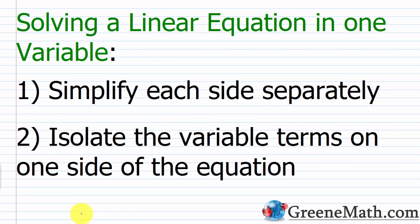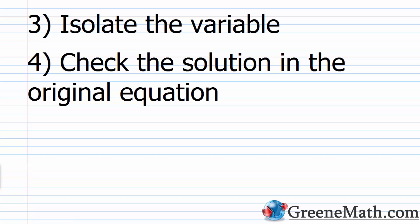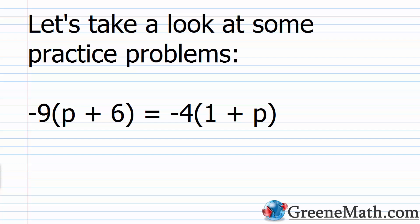Now that we've covered some of the basics, let's talk about the procedure to actually solve a linear equation in one variable. Your main goal is to isolate the variable — you want X, Y, Z, or whatever the variable is on one side, and a number on the other. Step 1: simplify each side separately — clear parentheses, combine like terms. Step 2: isolate the variable terms on one side using the addition property of equality. Step 3: isolate the variable using the multiplication property of equality. Step 4: check the solution in the original equation.